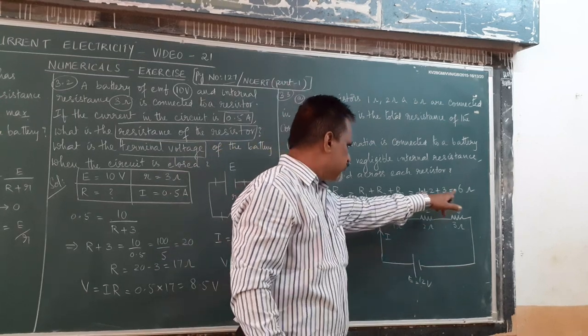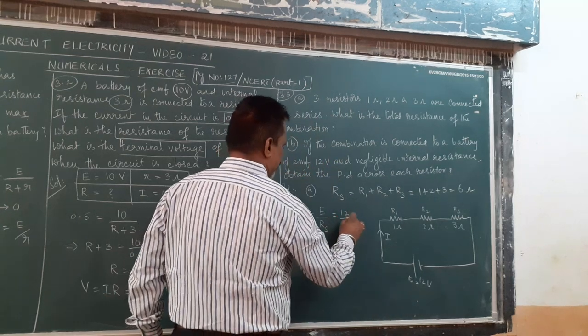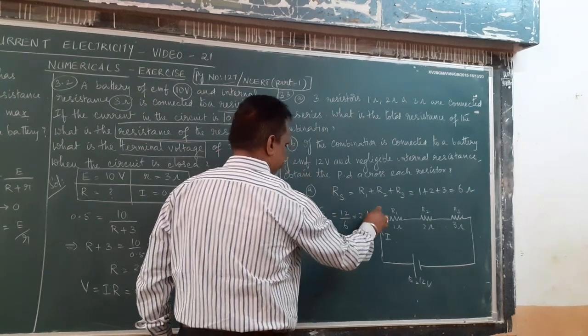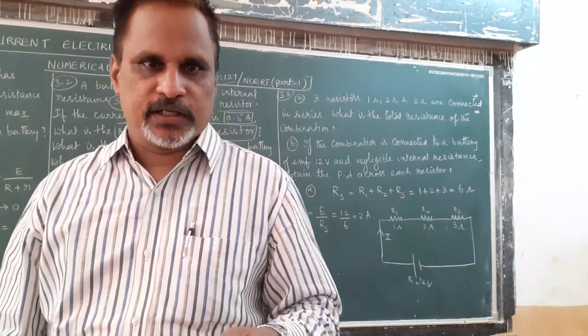Just find the current. Current I equal to E by RS. What is the effective resistance in series combination? 6 ohms. What is the EMF? 12 volt. So you will get 12 by 6 equals 2 ampere. The current in the circuit is 2 ampere.